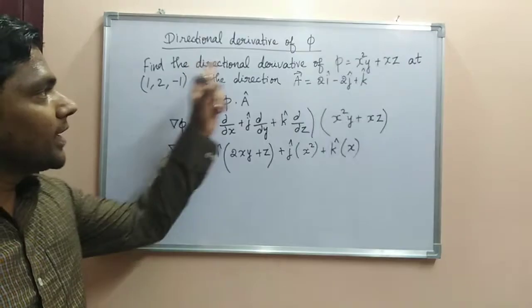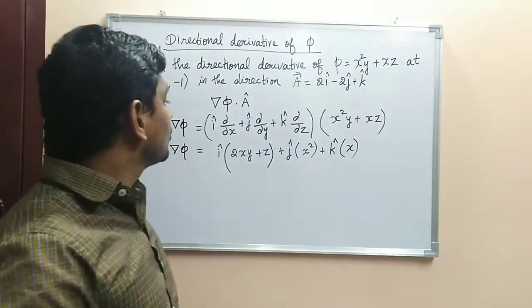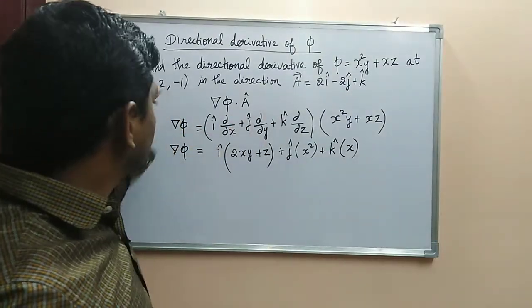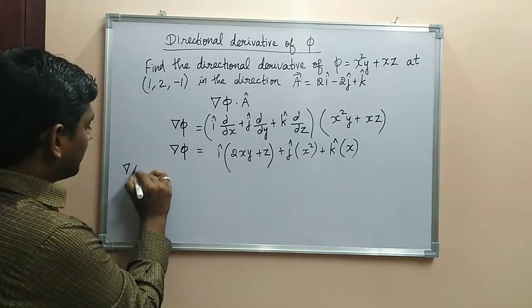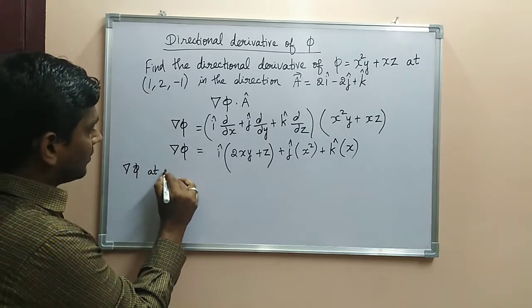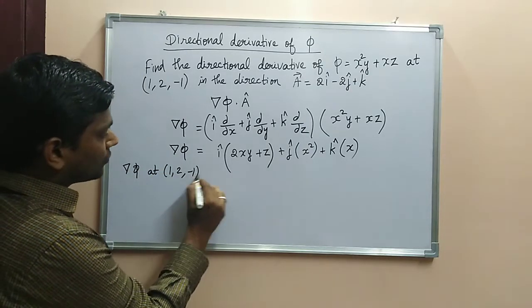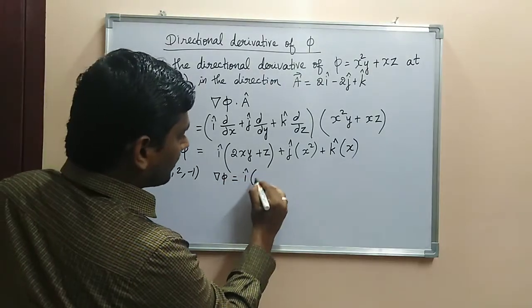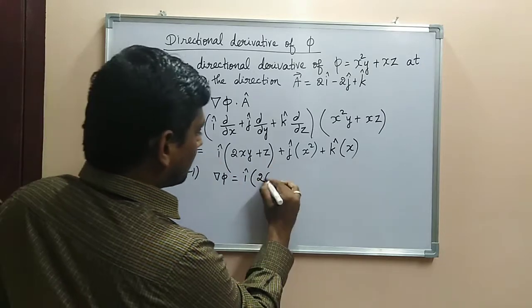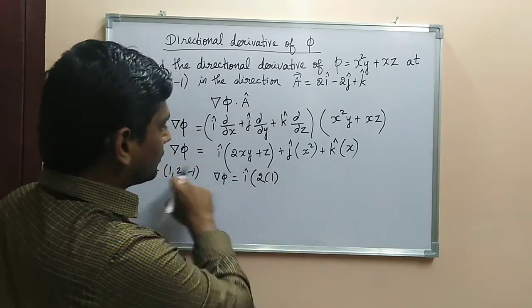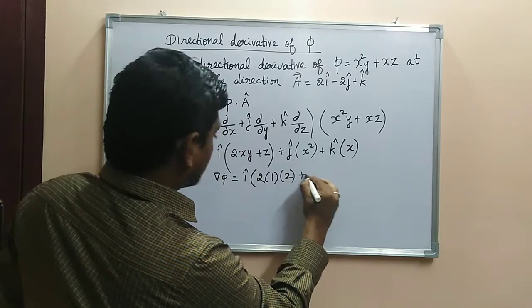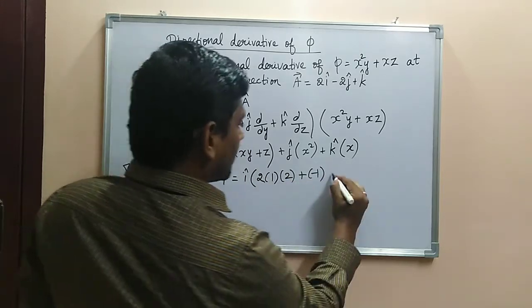So in question you have to find the directional derivative of Phi at this point, that is (1, 2, -1). So in this equation you have to apply these values. So ∇Φ at (1, 2, -1) means ∇Φ = i(2·1·2 + e^(-1)) plus j(1²) plus k(1).